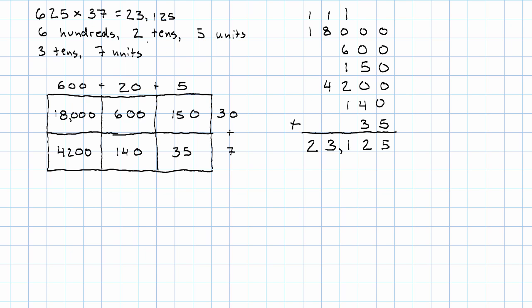Now of course in real life that's not how we do that multiplication. We might use the standard long multiplication algorithm. 625 times 37. First we multiply each digit by 7. 7 times 5 is 35, carry the 3. 7 times 2 is 14 and 3 is 17. 7 times 6 is 42 and 1 is 43.